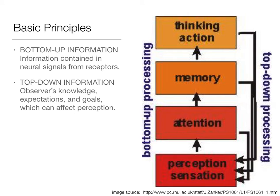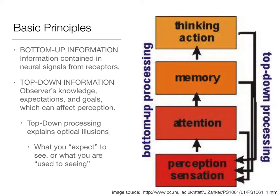Because of top-down information, I interpreted the text as something bad - the negative version - because I had all these other fires I was putting out, waiting for the other shoe to drop. That's top-down processing affecting my perception of that incoming information. Top-down processing also explains illusions, optical and auditory. There's a supplementary folder on iCollege with different illusions showing how thinking, memory, and attention affect our interpretation, and how what you expect to see or hear can trick you into perceiving something different than what's actually happening.